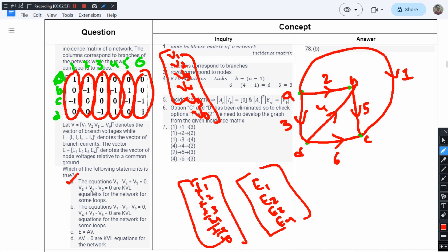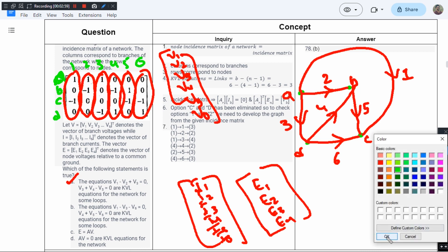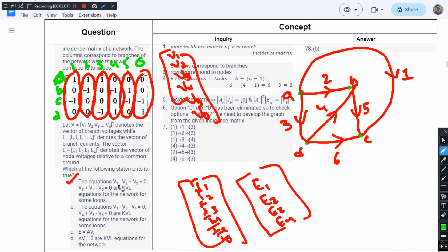Let us verify option A. It says the equations V1, V2, V3. Let us try to find them. We are talking about V1, V2, V3—the branch voltages. V1 corresponds to this one, here we have V2, and here we have V3, and they are being combined.